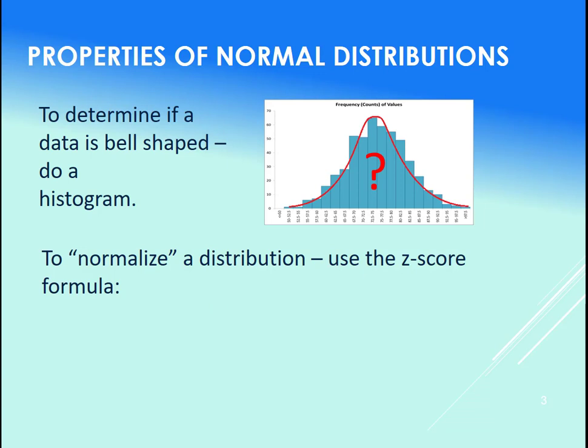And to normalize a distribution, so let's say you take this data set - it ranges all the way up to almost 70. What we often do with data sets is we get the z-score for each of the x values within the data set.